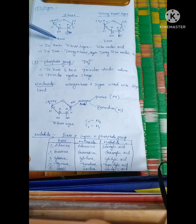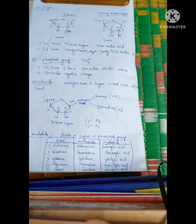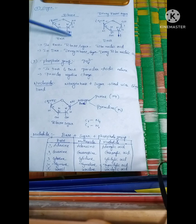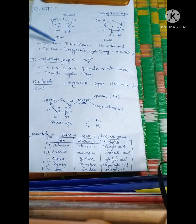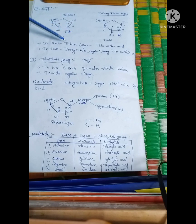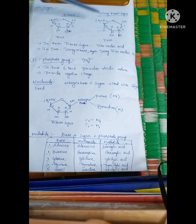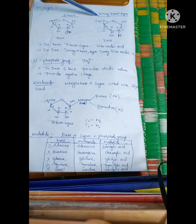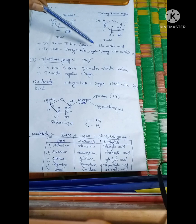RNA uses a sugar called ribose sugar, also known as ribonucleic acid. DNA uses a sugar called deoxyribose sugar, also known as deoxyribonucleic acid.